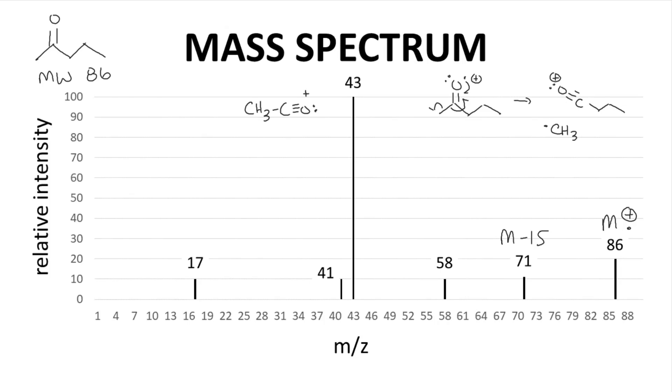which would be very stable. The Mz 43 peak could also be from a propyl cation. Either way, it has an Mz 43 and is consistent with an expected fragmentation from the parent ion.